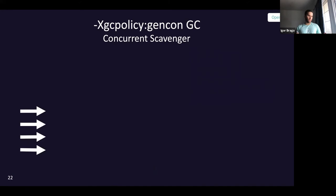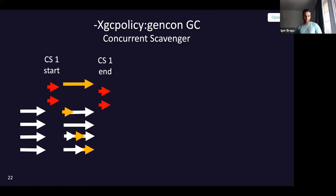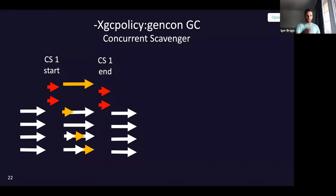Under GenCon, the application runs — represented by white arrows — and we have a concurrent scavenger with two very short stop-the-world pauses: one at the beginning to mark the roots, and one at the end. Once roots are marked, application threads run concurrently with GC threads — shown in yellow. At the end of the GC cycle, we stop all application threads briefly to bring GC threads into synchronization, then let the application continue.